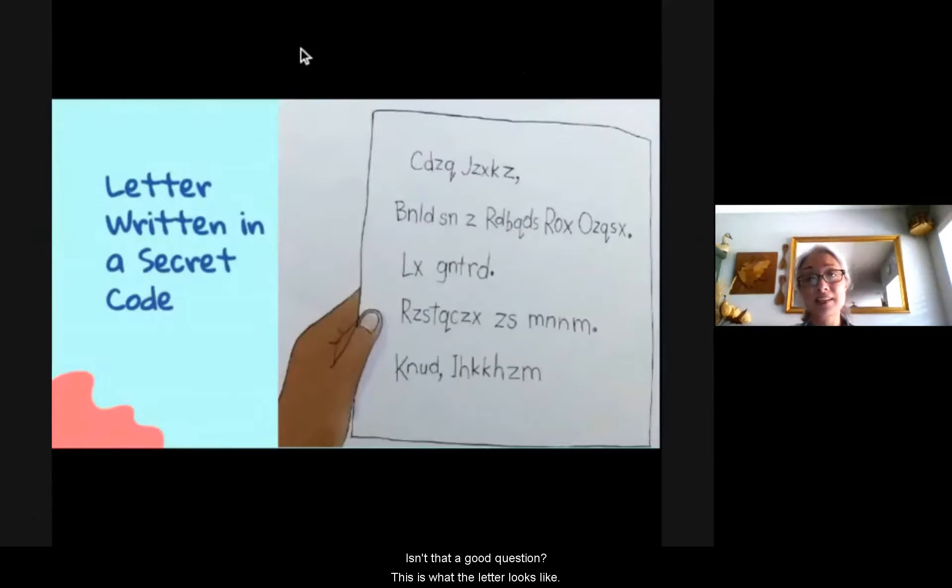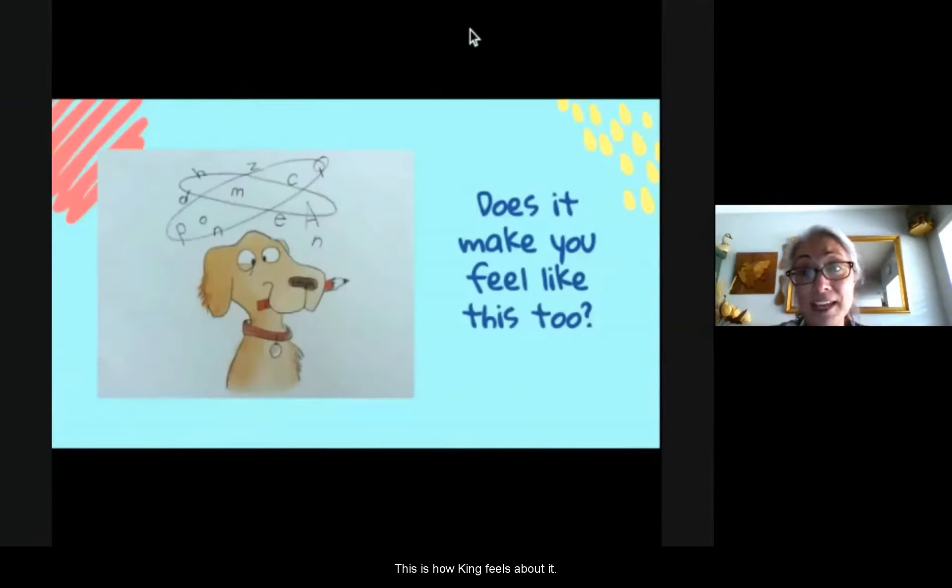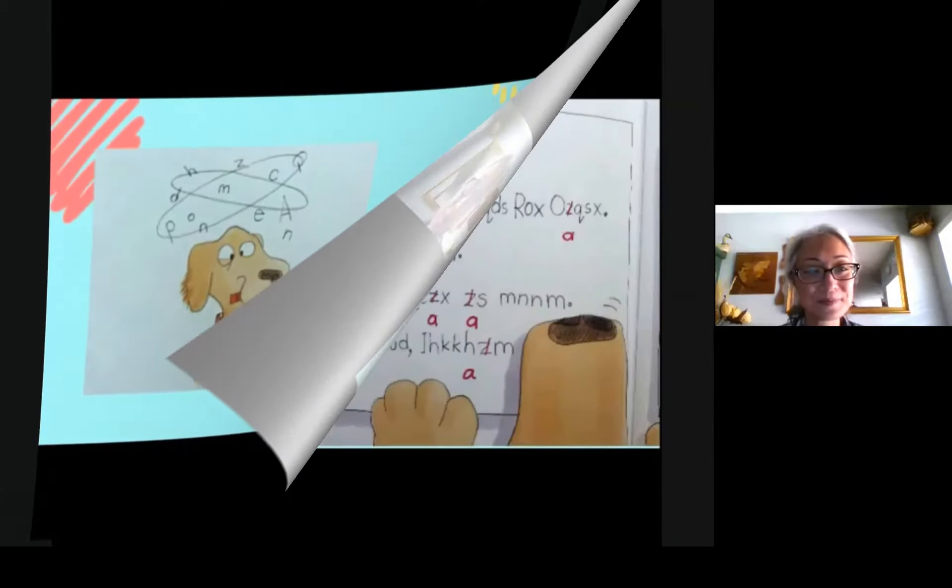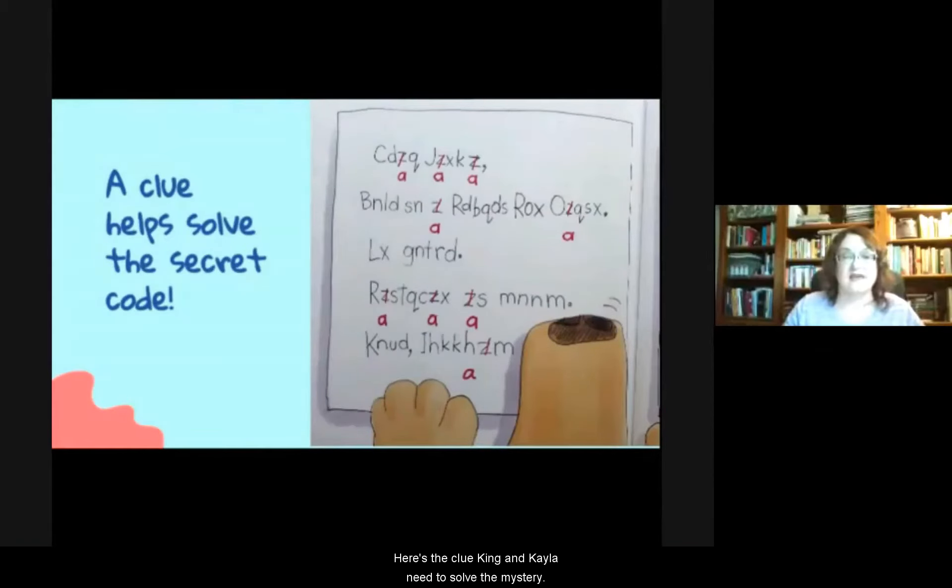This is what the letter looks like. That looks kind of hard to read, doesn't it? This is how King feels about it. Do you see all the letters just circling above his head? This letter is really hard to read, isn't it?